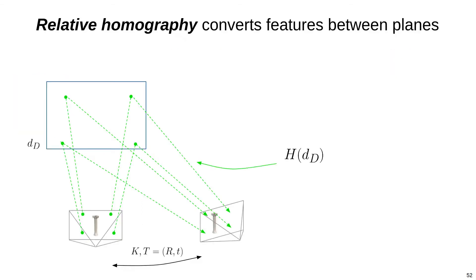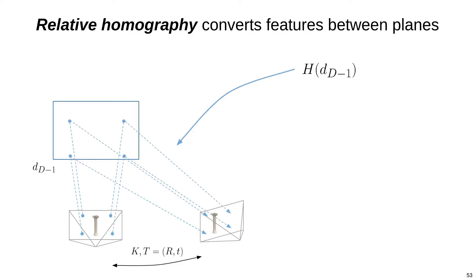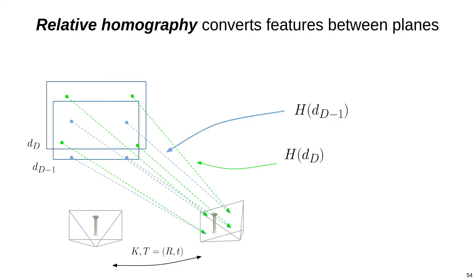Let's first look at the homography corresponding to depth d. This transform converts pixels in the reference image domain to the other camera's domain, assuming the 3D points in space lie on a plane at depth d. Now let's look at the homography for depth d-1. It again transforms pixel coordinates between the two frames, but now assumes that the plane lies at depth d-1. What we'd like to do is compute the homography that instead connects these two planes. We'll call this transform delta h and refer to it as a relative homography. Now, given h of d and h of d-1, we can compute delta h simply as h of d inverse times h of d-1.